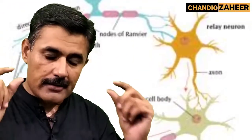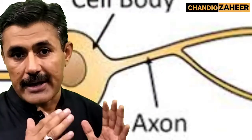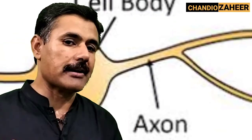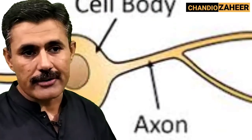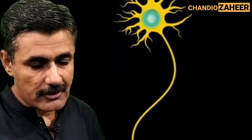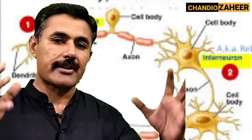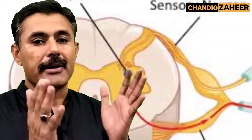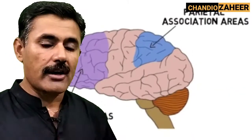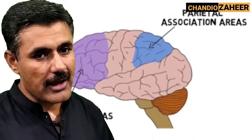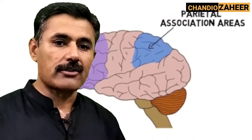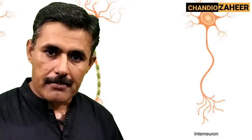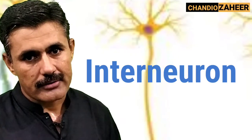The axons of these inter-neurons lack myelin, so they are non-myelinated neurons as far as the axon is concerned. This is another kind of neuron — the inter-neuron — and they are present in the CNS, relaying information and making the association area which analyzes the stimuli that sensory neurons transfer to the brain.